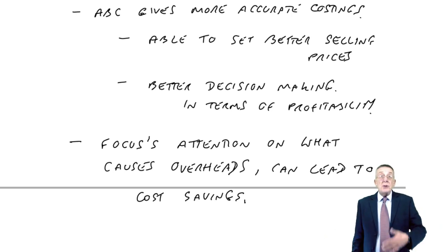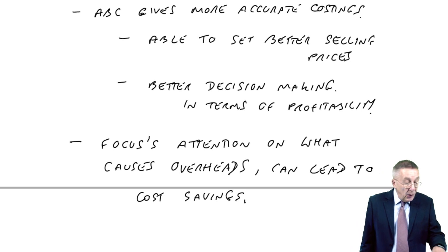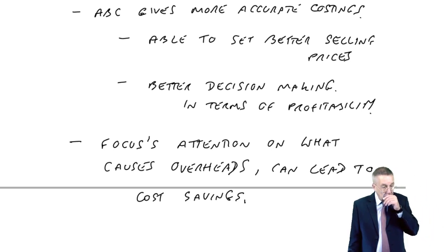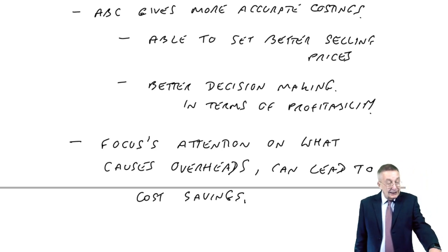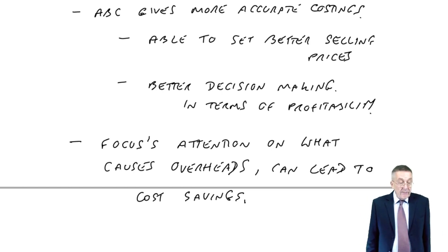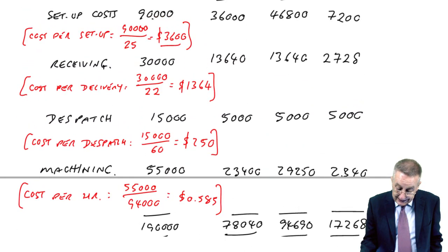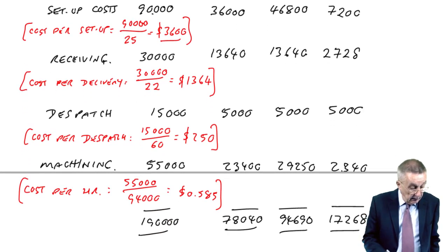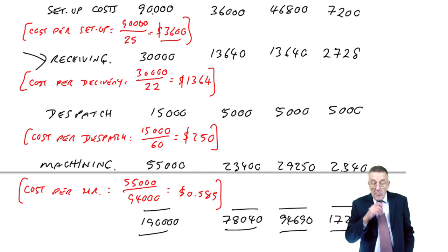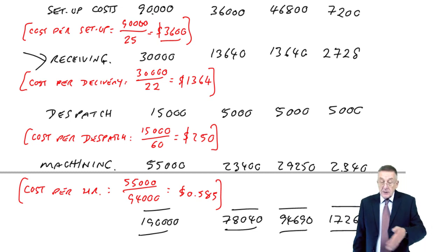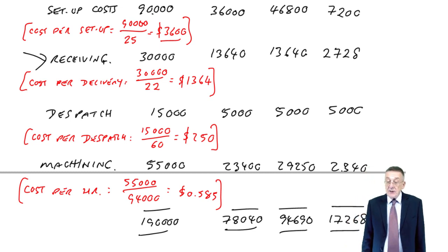With traditional costing, we just take total overheads, we do the arithmetic, labour hours, and it was rather irrelevant where we were spending the money. But with activity-based, we look in each case what is causing the overheads. And just look at deliveries received. We worked out the cost per delivery. It was the receiving cost. And we split it on that basis, so 13,000 to A, 13,000 to B, and 2,700 to C.